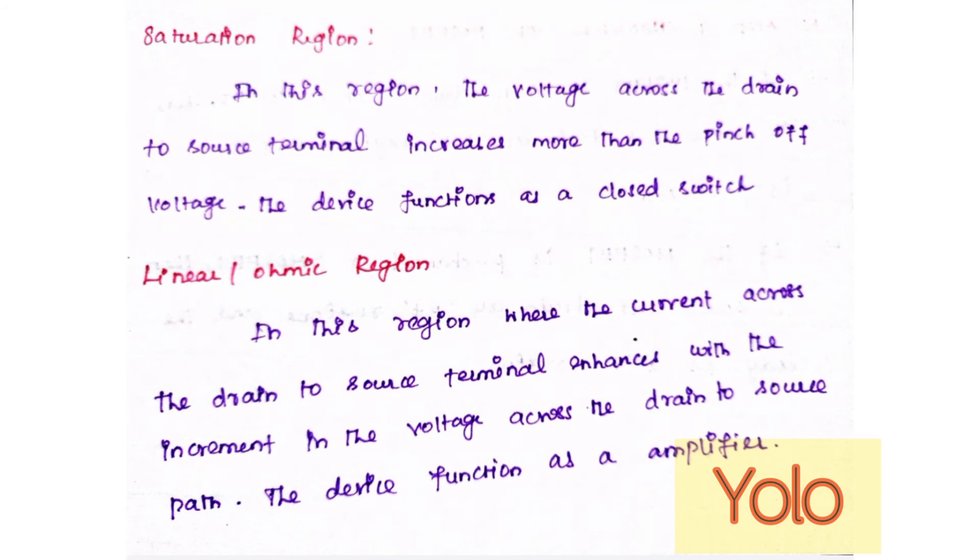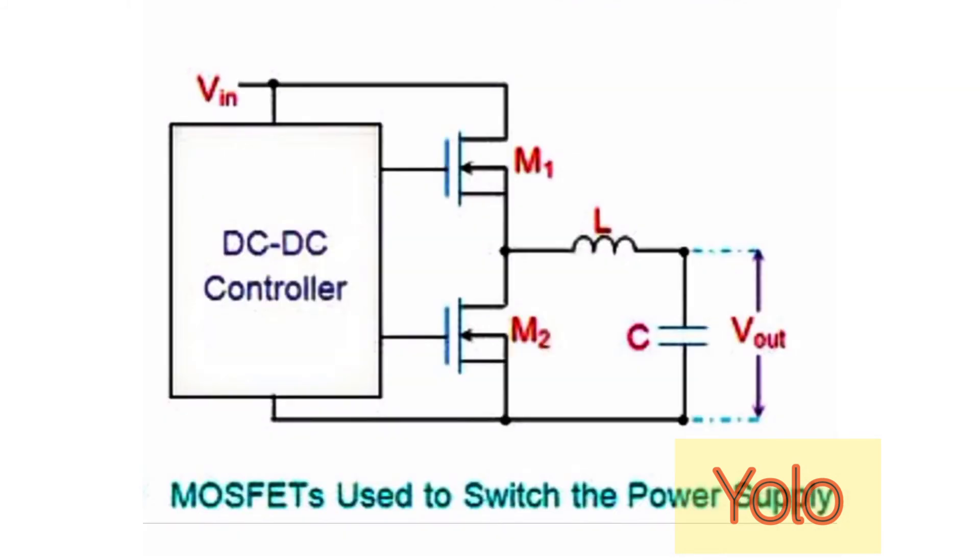Linear or ohmic region: In this region, the current across the drain to source terminal enhances with the increment in the voltage across the drain to source path. The device functions as an amplifier.